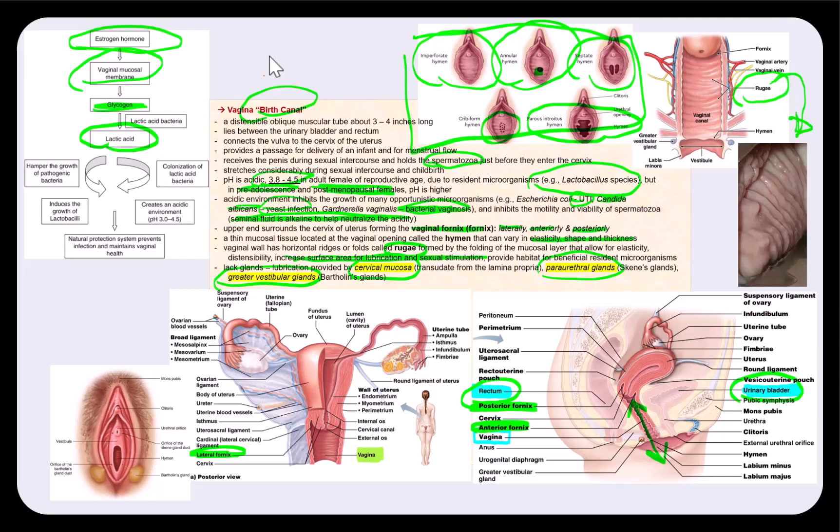So the cervical mucosa, specifically at the layer of the lamina propria location, they secrete what's called transudate. Then the periurethral glands are also called the Skene glands that we find lateral to the opening of the urethra. So here is the opening of the periurethral glands.